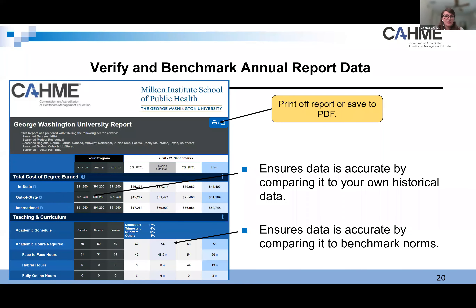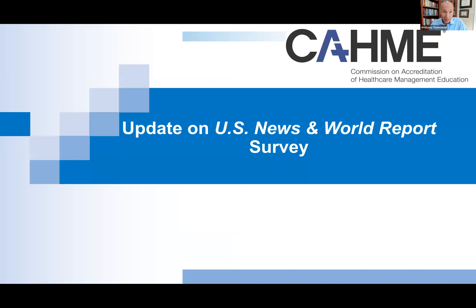I'd like to turn the presentation over to Anthony, who will discuss the update on U.S. News and World Report Survey. Thanks, Michelle. The U.S. News and World Report Survey typically was done once every three years. U.S. News delayed it this time, so it's actually once every four years. The next survey is expected to go out, and we'll tell you about the timeframes for that.